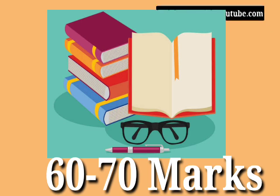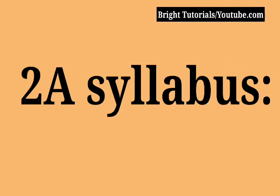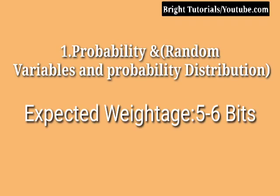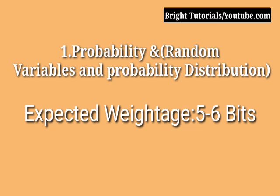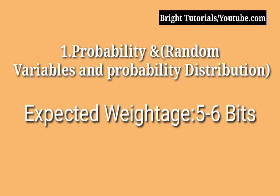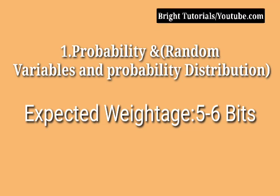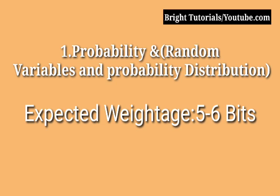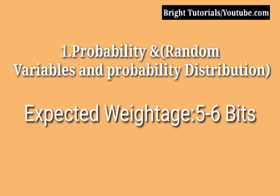We will start with the second year syllabus first. In the 2A syllabus, first priority should be given to Probability and Random Variables and Probability Distribution. These chapters can give you 5 to 6 bits in MSET 2021 and are easy to score. The important topics here are Bayes' theorem, multiplication theorem, and addition theorem problems.